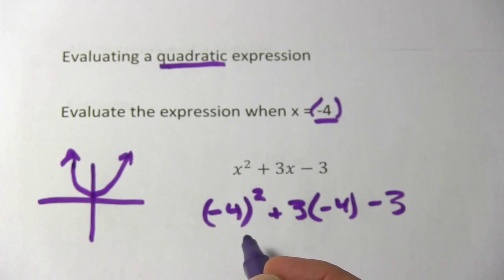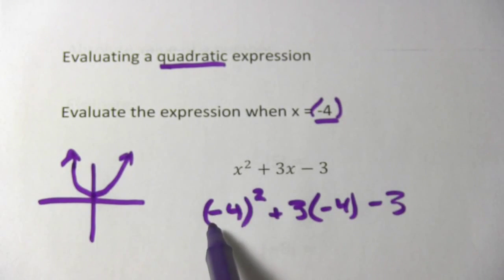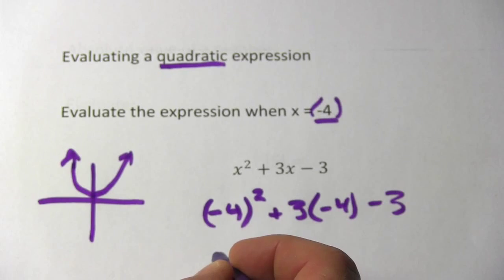Now we can go ahead and calculate this. We'll start with the exponents. We have negative 4 to the second power. Because that negative sign is inside the parentheses, that gets squared, so this is going to be a positive, and 4 times 4 is 16.